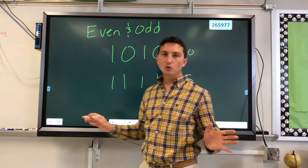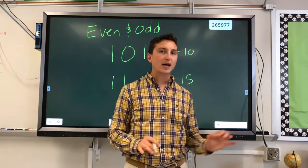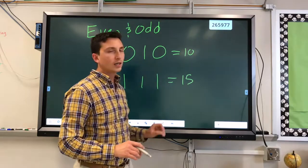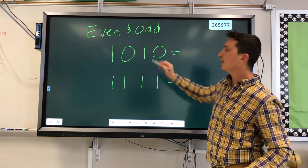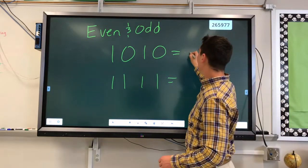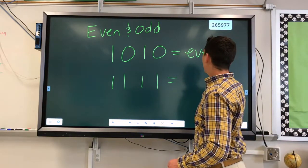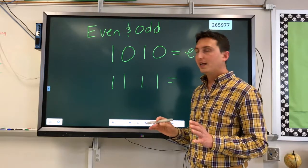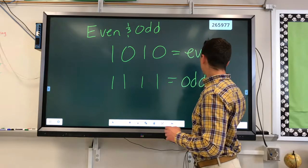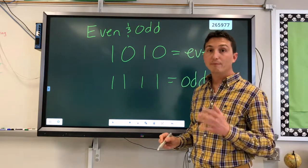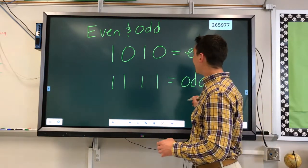But without doing the math like we did last time, I can look at these numbers and I can tell you right away, I can tell you right away this is going to be an even number, even if I didn't do the math. Even if I did not do the math and I didn't know what that equaled, I would know that the top number 1, 0, 1, 0 would be even, and the bottom number 1, 1, 1, 1 would be odd.